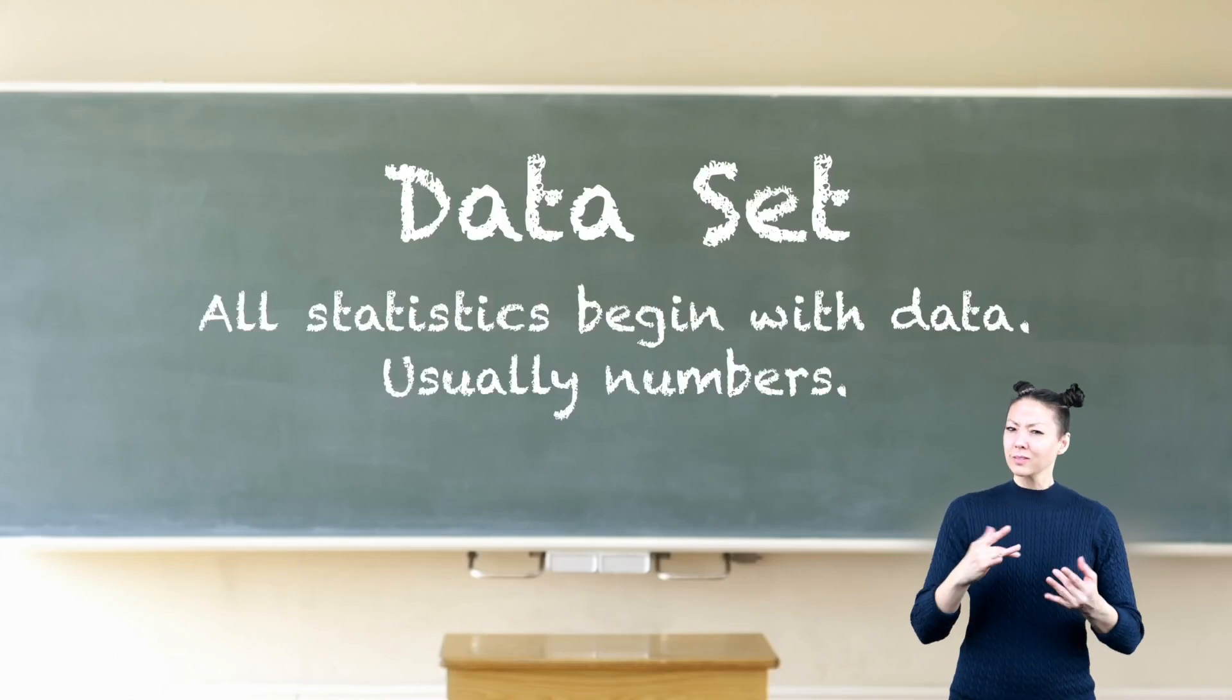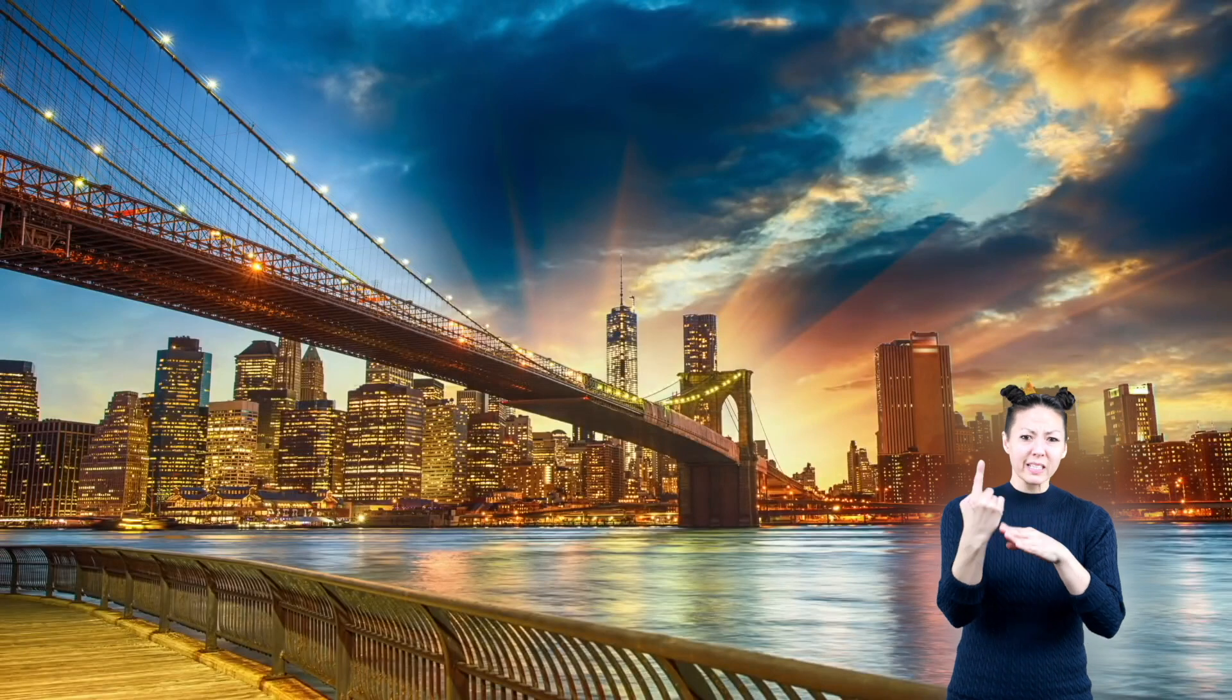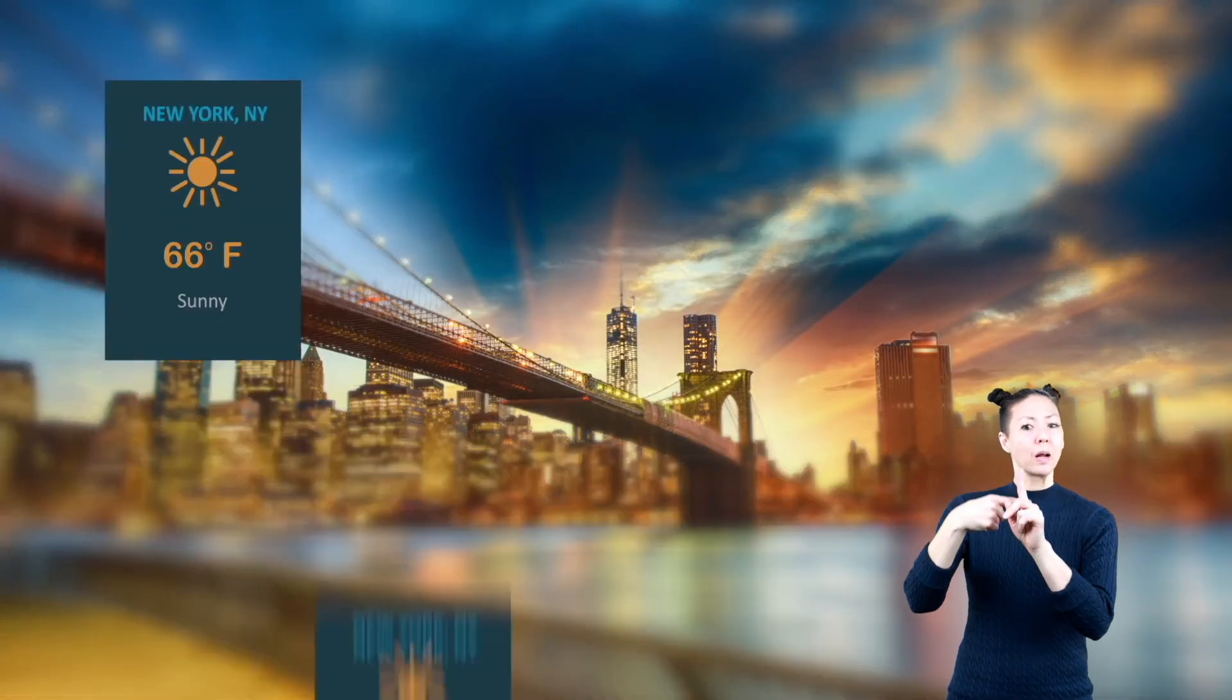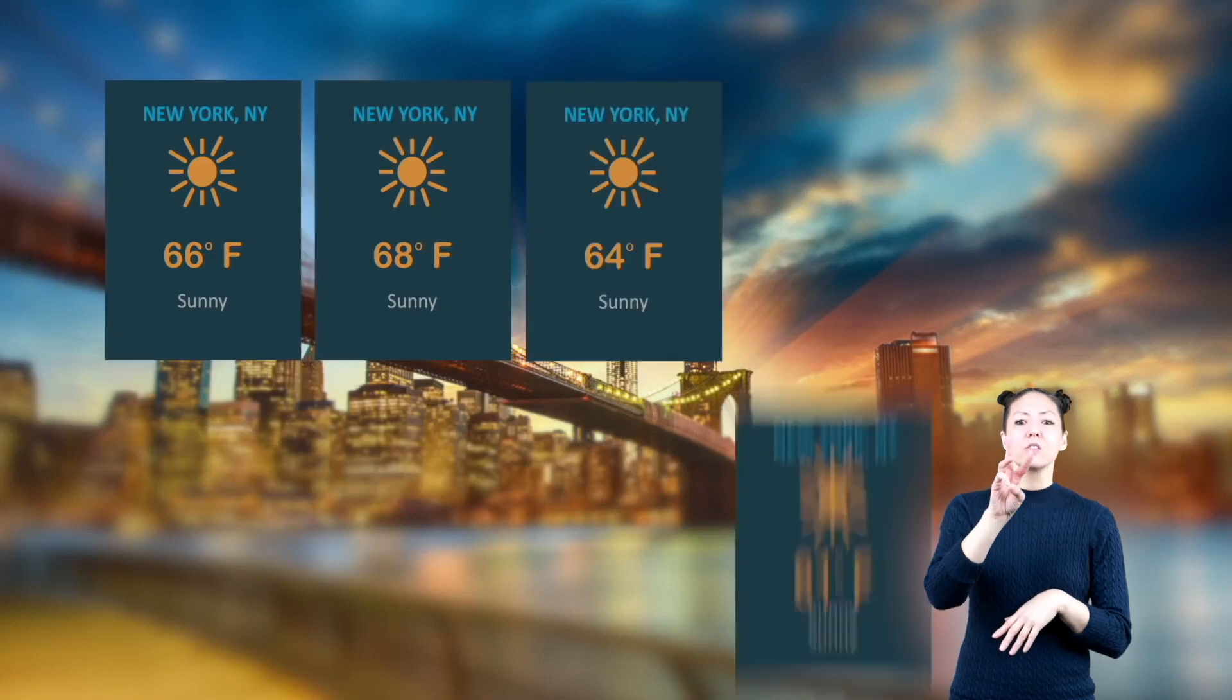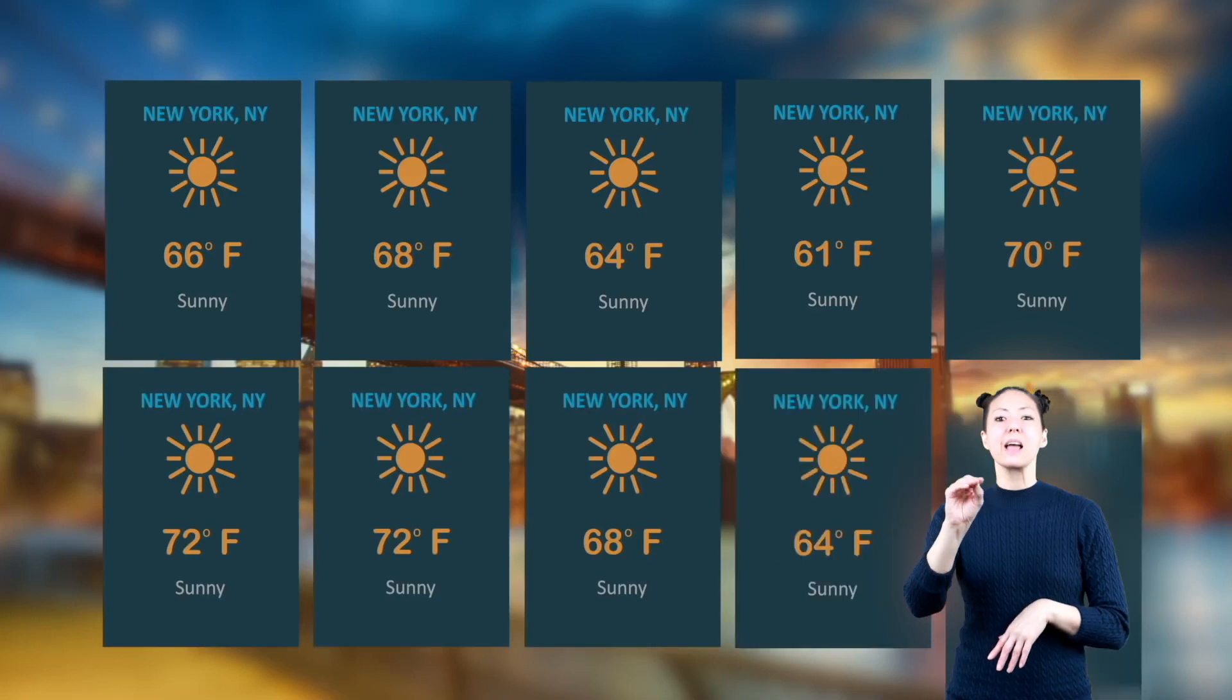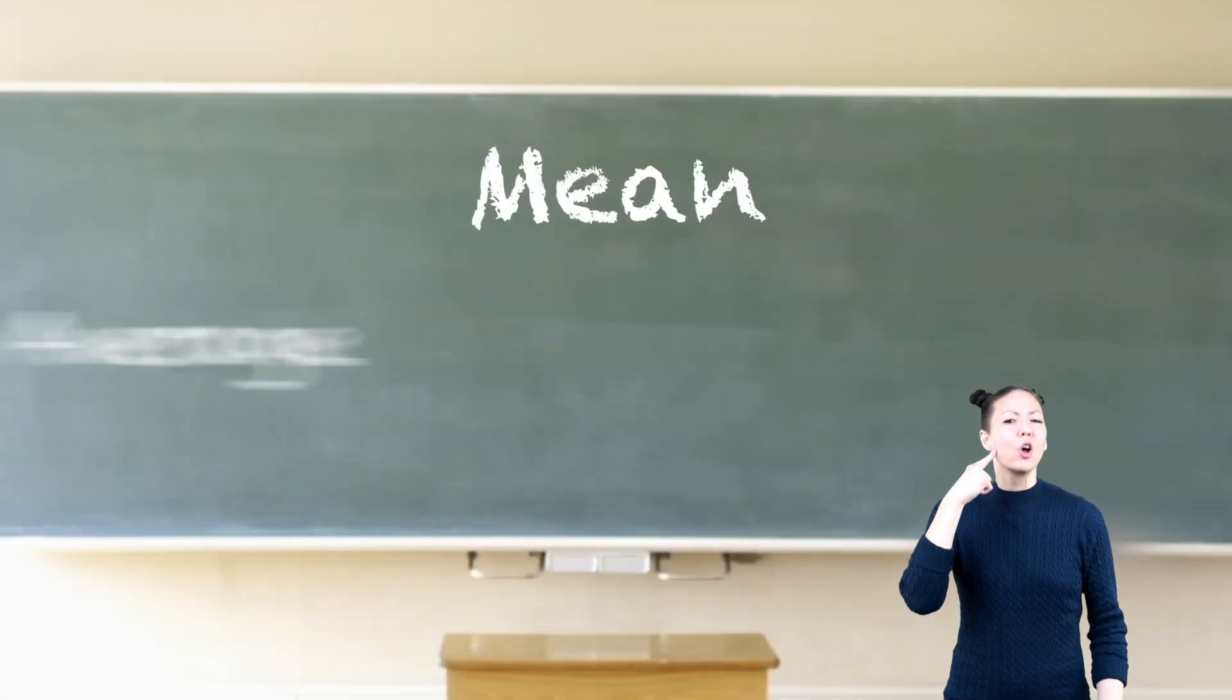Here's an example: 10 straight days of temperatures in New York City during October were 66, 68, 64, 61, 70, 72, 72, 68, 64, 64. Mean: most likely you have heard of the word average.